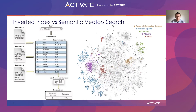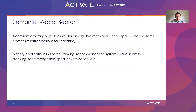On the other side, semantic vector search encodes text into vectors in such a way that semantically similar texts will be located near each other in the vector space, whereas dissimilar texts will be far away from each other. In other words, semantic vector search gives us the possibility to represent arbitrary objects as vectors in some high-dimensional vector space and use a vector similarity function for searching.